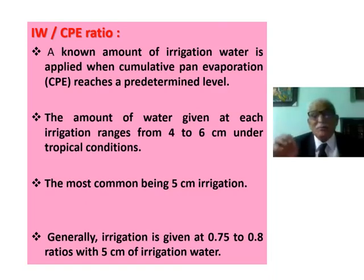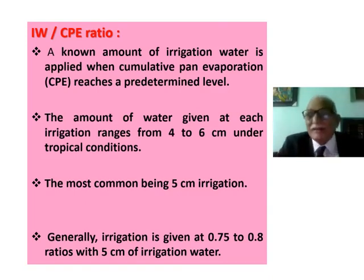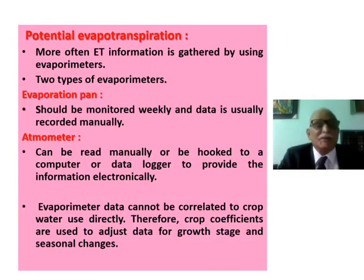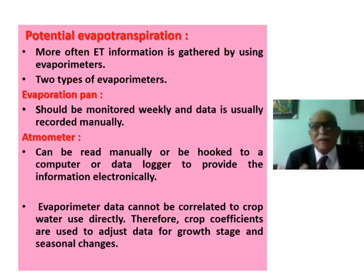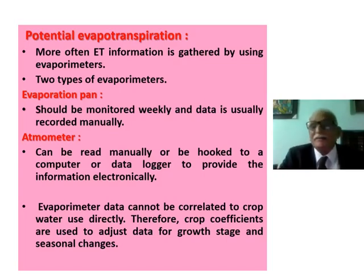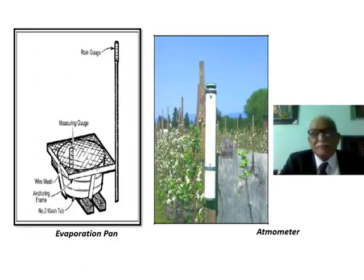IW/CPE ratios commonly used range around 0.75 to 0.8, and these are used for scheduling irrigation in tropical regions for crops like pulses and cereals. Evapotranspiration data is gathered using evaporimeters. Two main types are the evaporation pan — the USWB (United States Weather Bureau) open pan — and the atmometer.